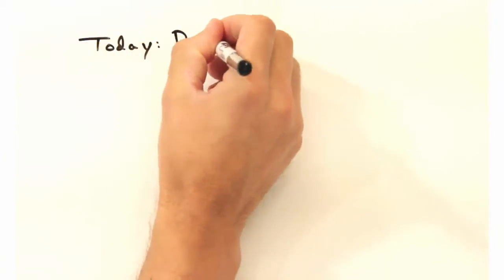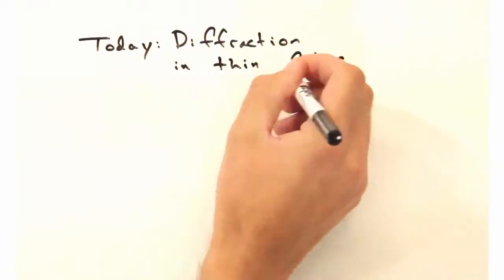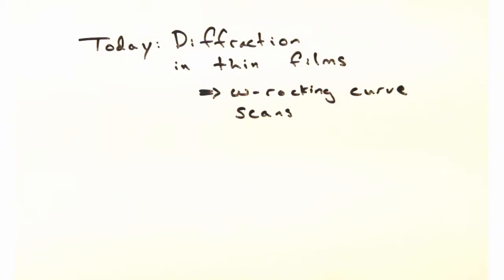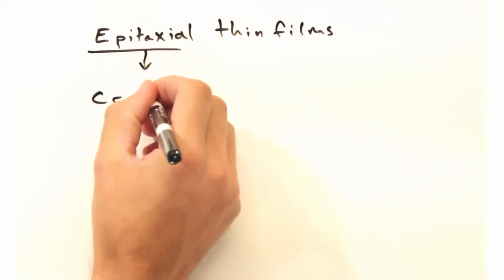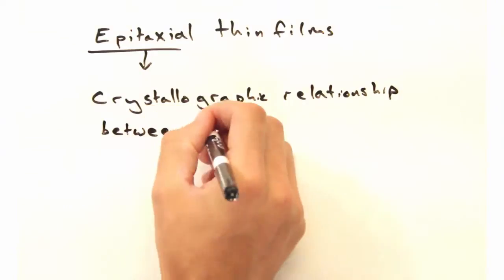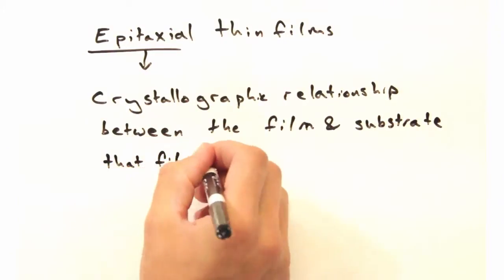Today our goal is to look at diffraction for thin films and introduce the omega rocking curve scan. You'll typically use this technique on an epitaxial thin film where there's a crystallographic relationship between the thin film orientation and the substrate you're growing on.